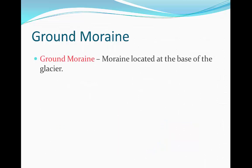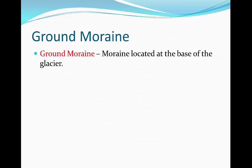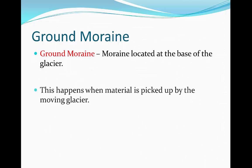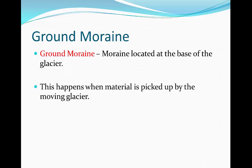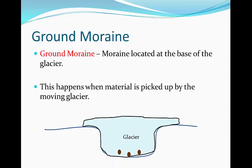Ground moraine is moraine located at the base of the glacier. Just like lateral moraine, it happens when material is picked up by the moving glacier. As the glacier moves forward, it's going to pick up and entrain sediment located along the base, which forms ground moraine, as opposed to the sides, which is lateral moraine.